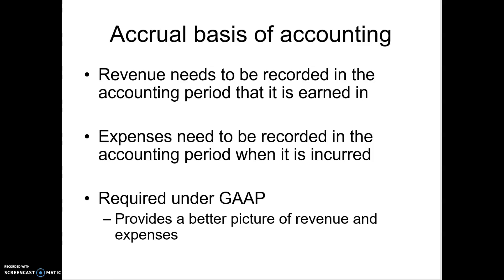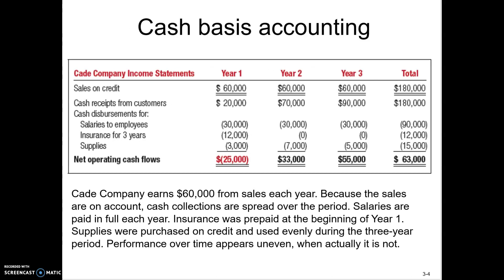Let me show you an example of the rationale for why the accrual basis is used. Here's a company on the cash basis whose sales have been even — very stable, $60,000 in credit sales every year. However, in year one they only collected $20,000 from customers, so even though they performed $60,000 of services, they only reported $20,000 of revenue. Year two they collected $70,000, and year three they collected $90,000.